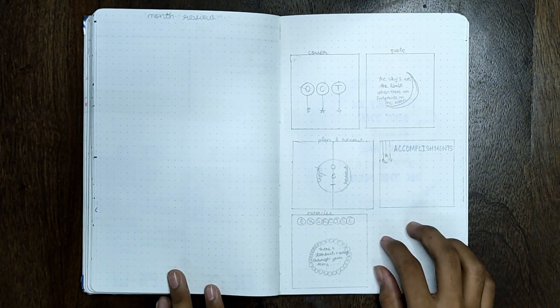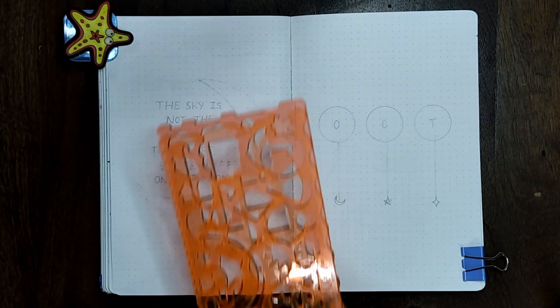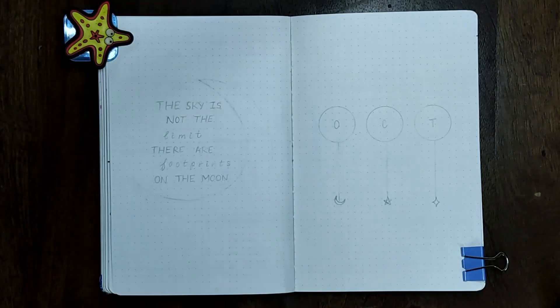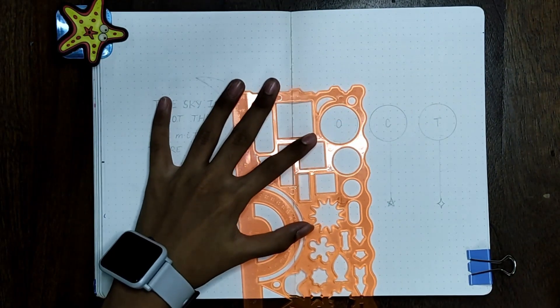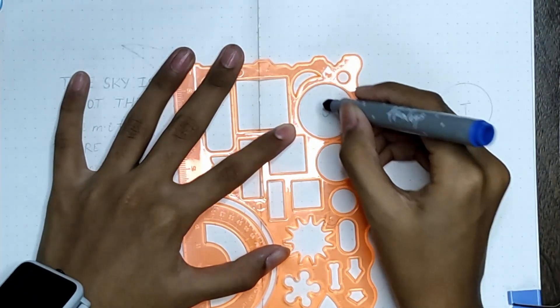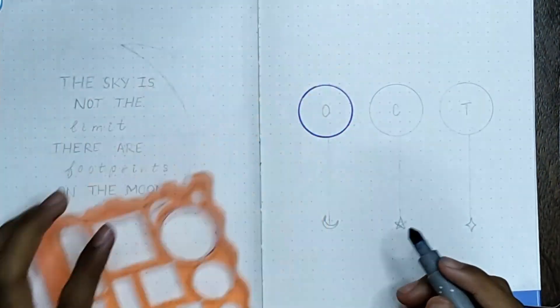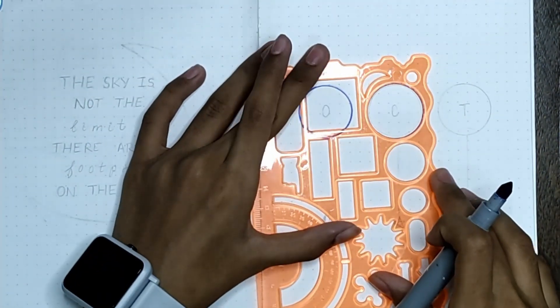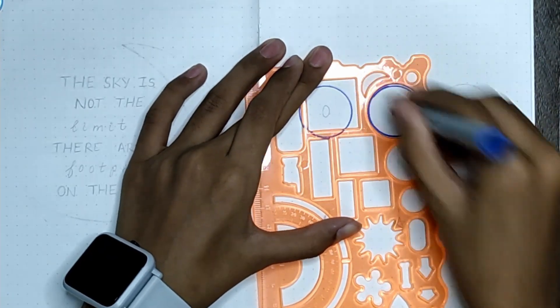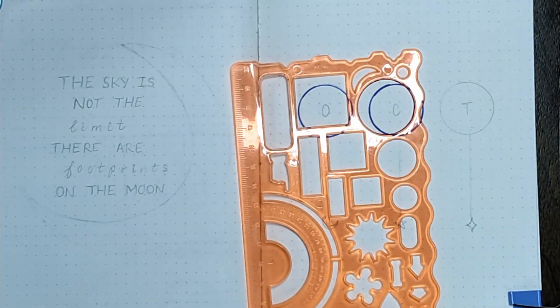So now let's get into my October bullet journal. I have my trusty stencils to help me out with setting up this bullet journal. Now, as you might have guessed from the thumbnail of this video, the theme that I'm choosing for October is moons and stars and kind of a night sky thing.